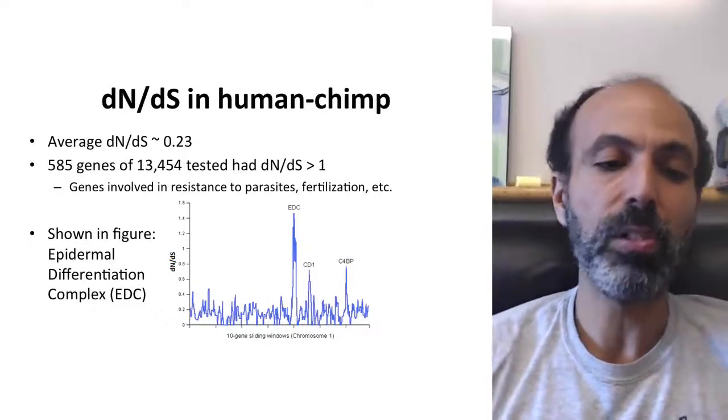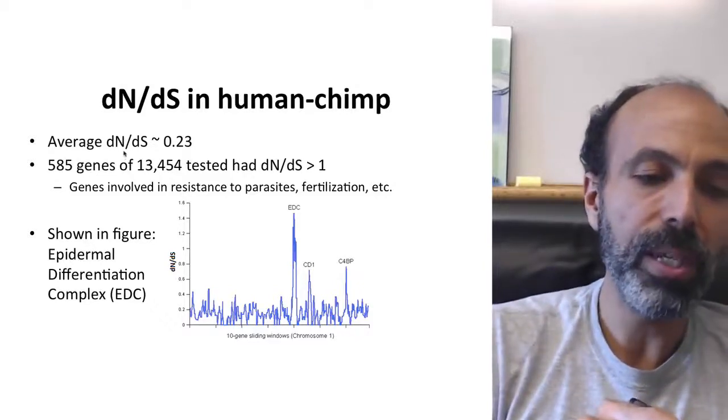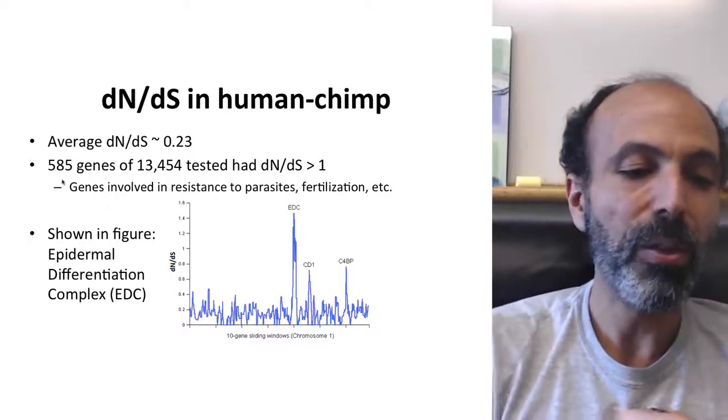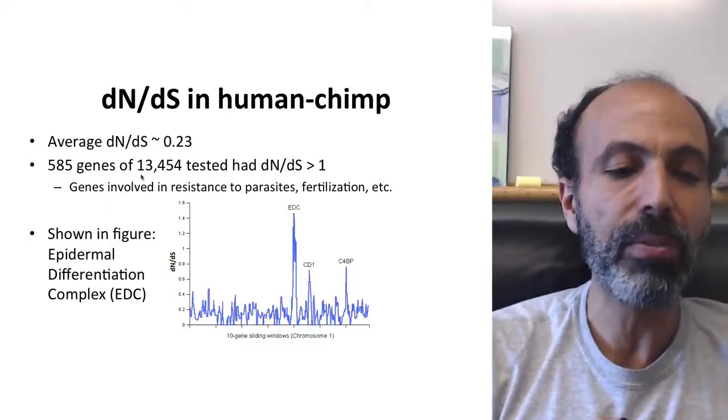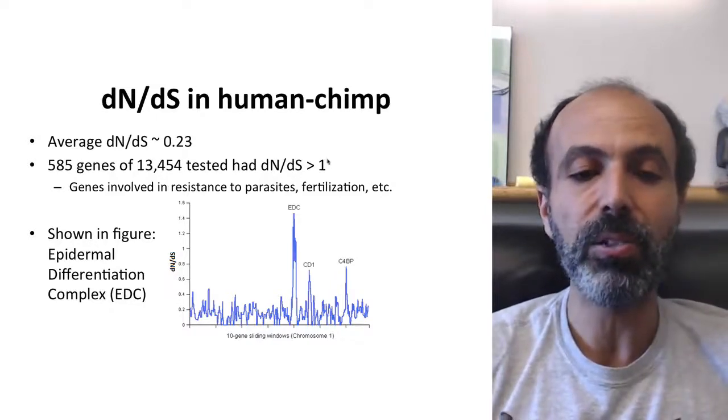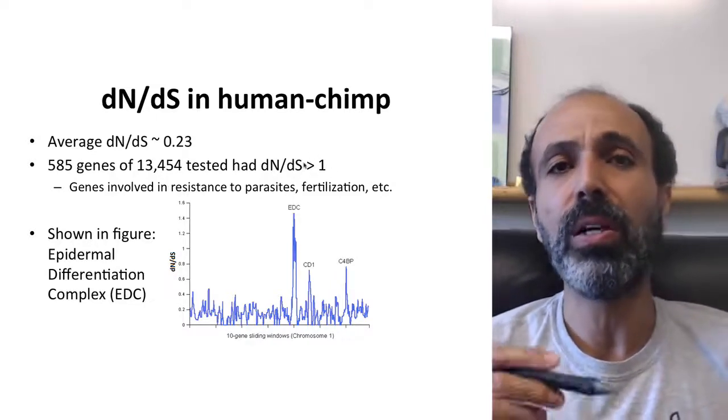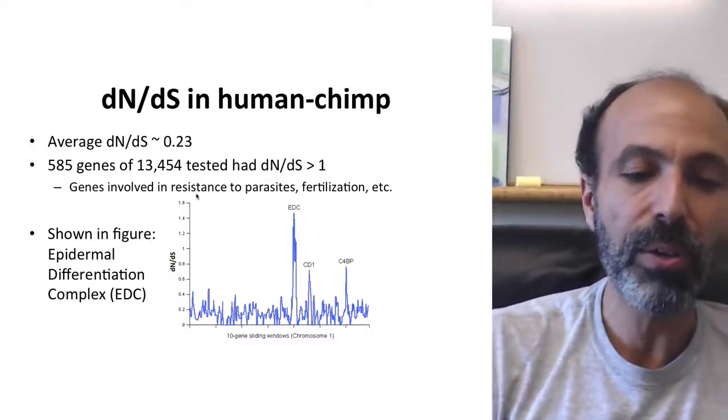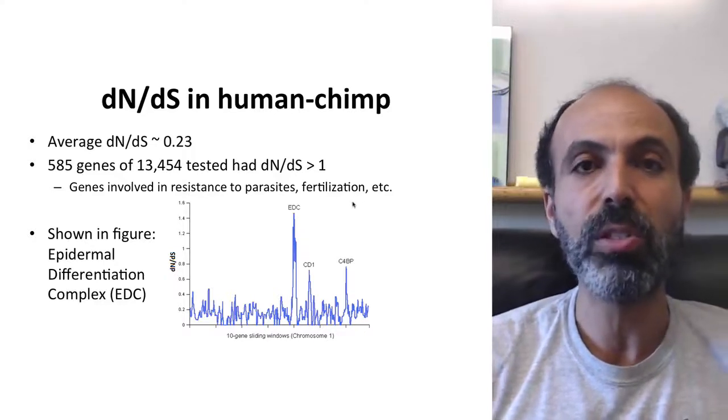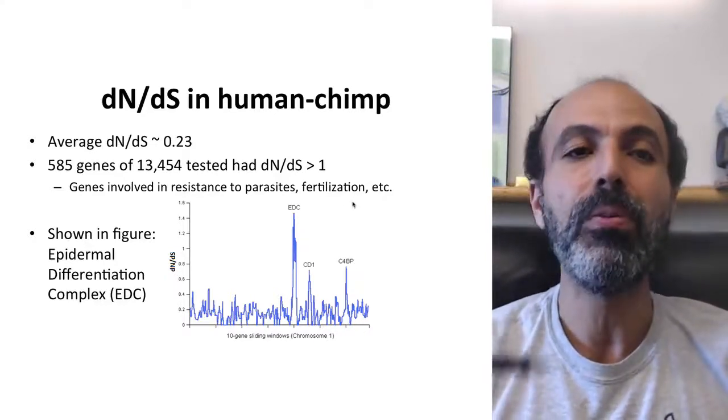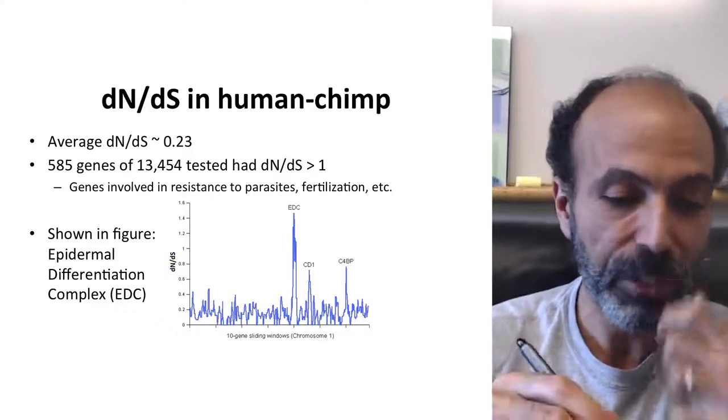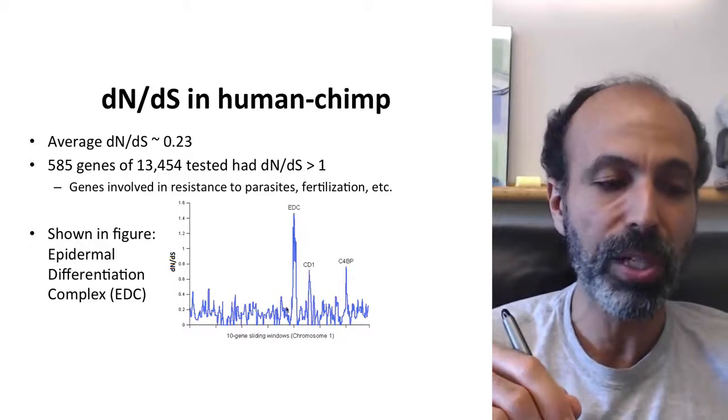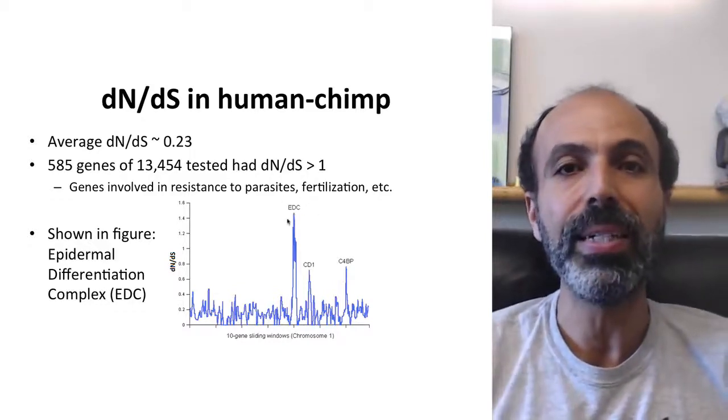Let me show you a plot. Here is dN/dS values between humans and chimps. The average dN/dS across the genome is 0.23. There you go. That 0.25 we saw was fairly typical. There are 585 genes out of 13,000 that were tested that have a dN/dS value greater than one. These are the ones that are undergoing recurrent positive selection. That's very exciting. These are often genes involved in resistance to parasites or fertilization. These are ones that you would expect to undergo rapid recurrent evolution. This figure just shows you a sliding gene window, and you see these little peaks here. For example, the epidermal differentiation complex seems to be associated with a very high dN/dS value.